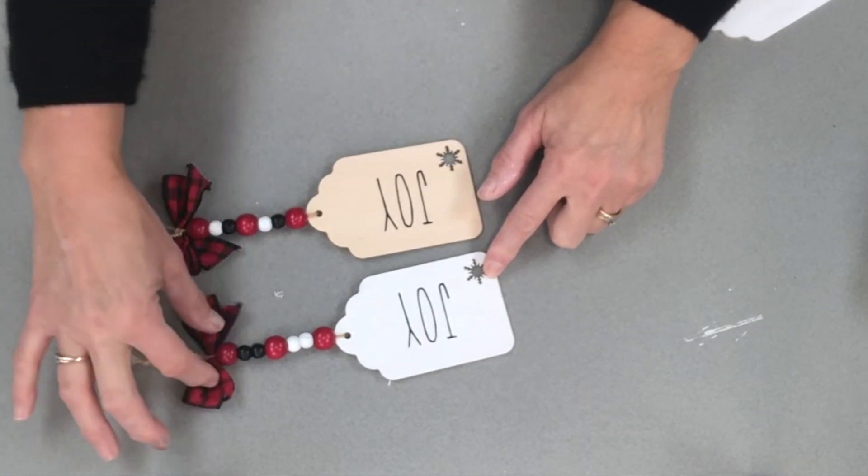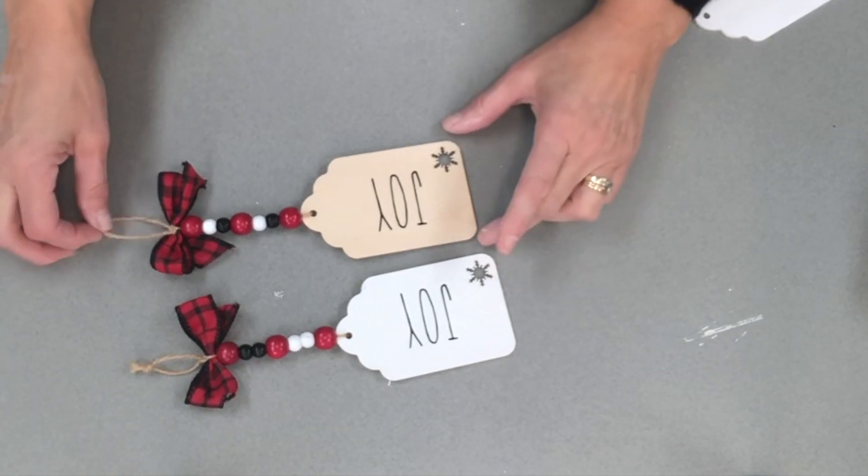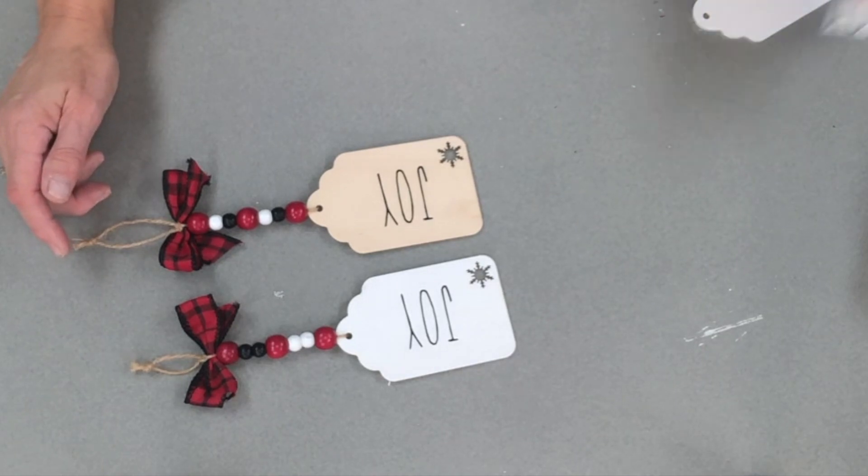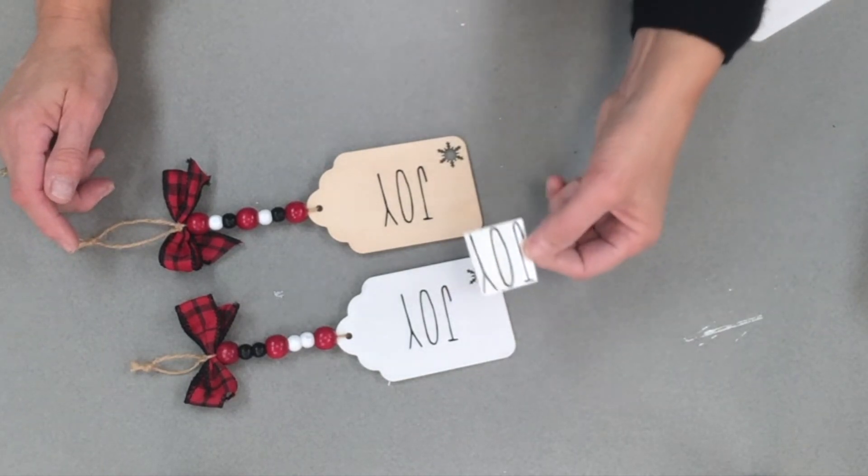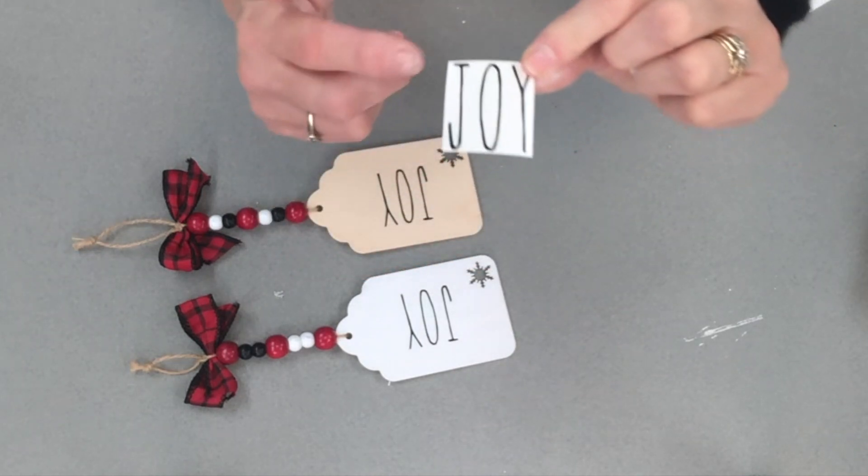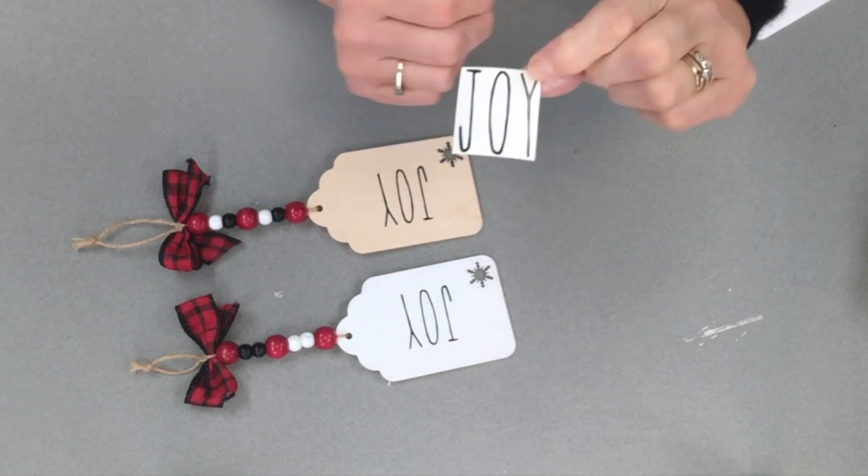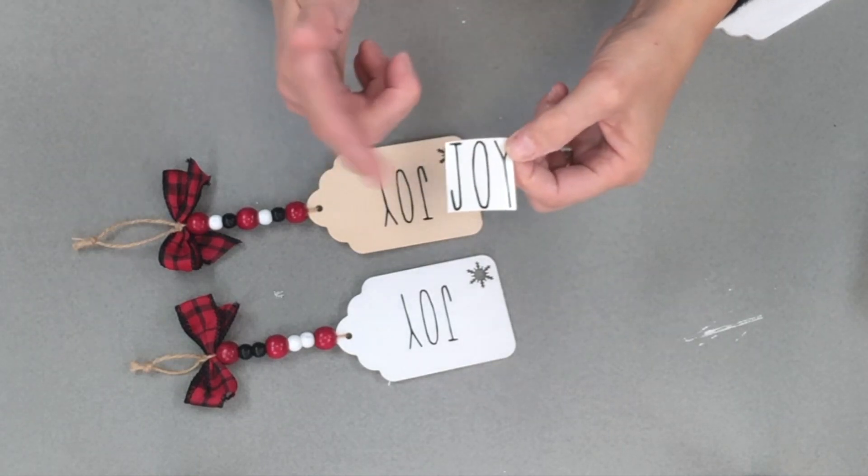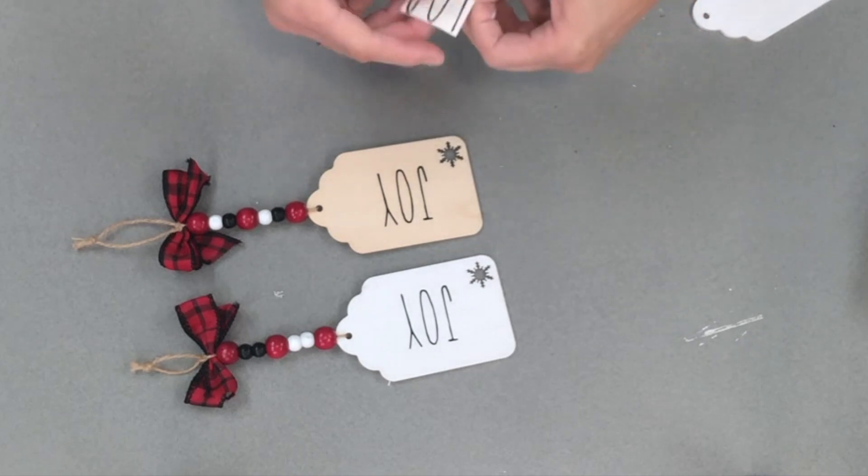a bow - you could definitely do just a straight ribbon - we're going to use some twine, and I actually had a whole bunch of joys cut out. I used my Cricut. I used the skinny font to cut out these joys and I had these left over from last year when we did a whole bunch of ornaments at our Christmas market.